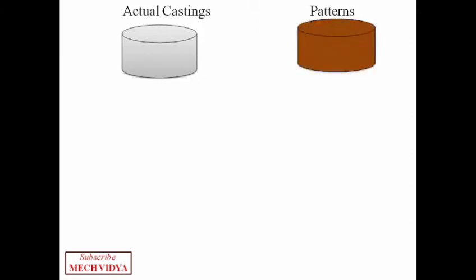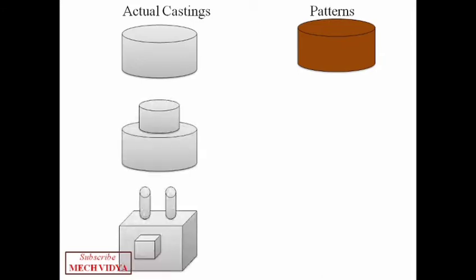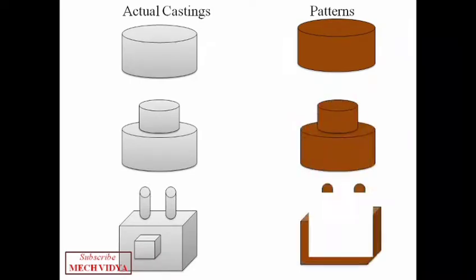Now to make a product of any shape by casting, we need something called a pattern. This pattern is an exact replica of the metal part that we want to manufacture. For example, if I want to have an aluminum casting of this shape, I first need to make a wooden pattern of the same size and dimensions. So similarly, if I need to create a metal part of this shape, I first have to make a pattern of these two shapes.